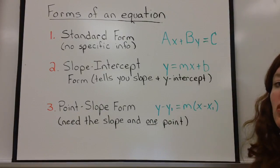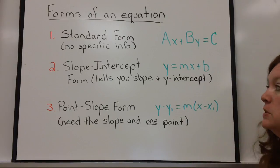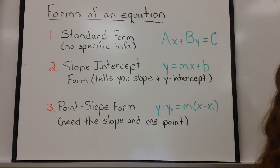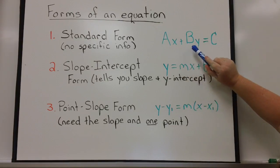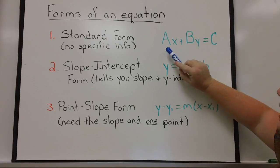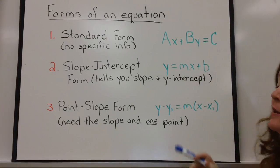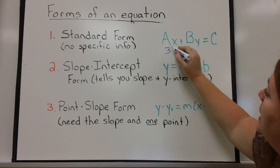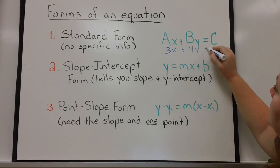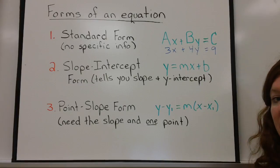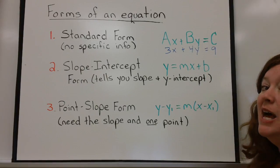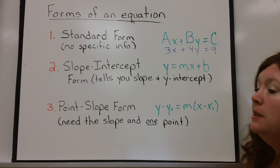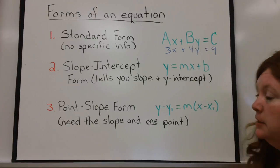I want to talk about the different forms of an equation. There are three forms we're going to work with. The first one is called standard form, written in the format ax plus by equals c. Now, a, b, and c do not represent any specific information. So I could have an equation 3x plus 4y equals 9, and the 3, the 4, and the 9 don't really tell me any specific information. That is usually the form you will see equations in most often.